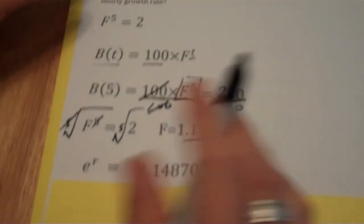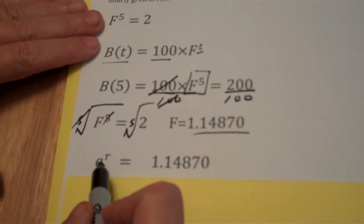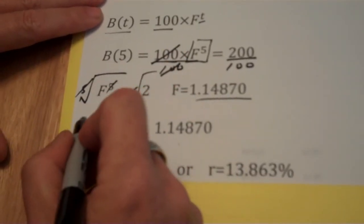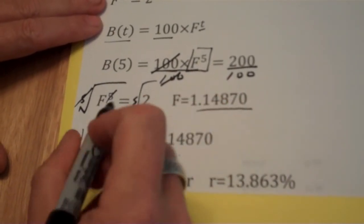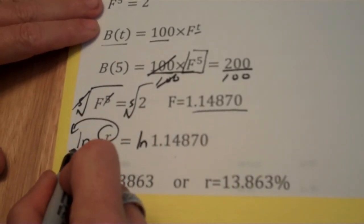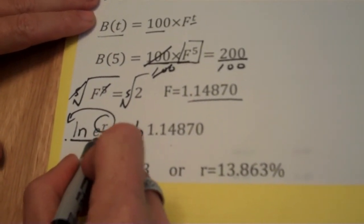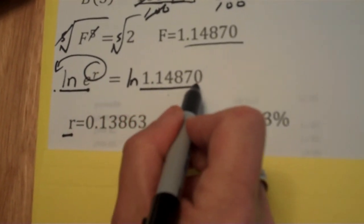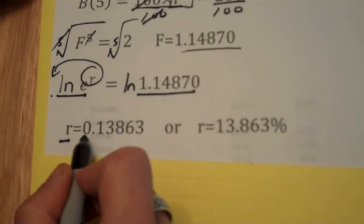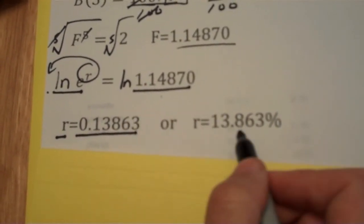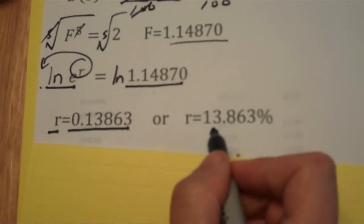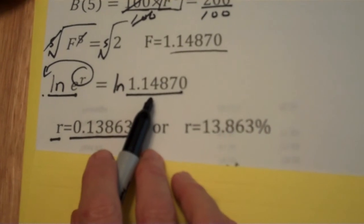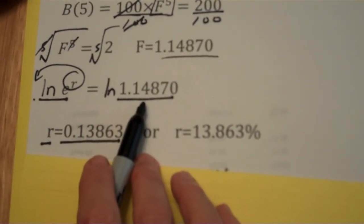When I'm doing the continuous rate, e to the r equals that growth factor. All I have to do is solve this equation for r by taking the natural log of both sides. I'll move the r down in front, and I'll have r times the natural log of e. The natural log of e is 1, so I just have r. If I take the natural log of this growth factor, I get the growth rate. This bacteria is actually growing at a rate of 13.863% continuously, which results in an hourly growth rate, once you've done all the compounding, of 14.87%.